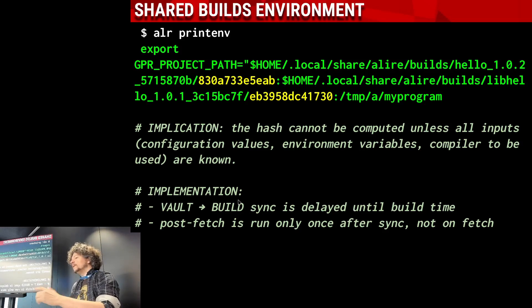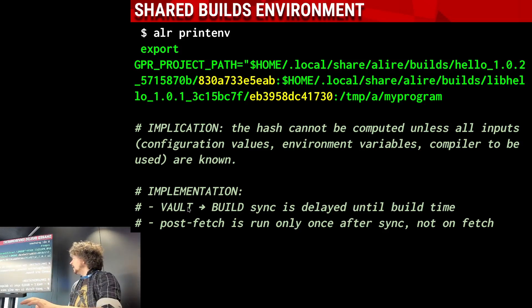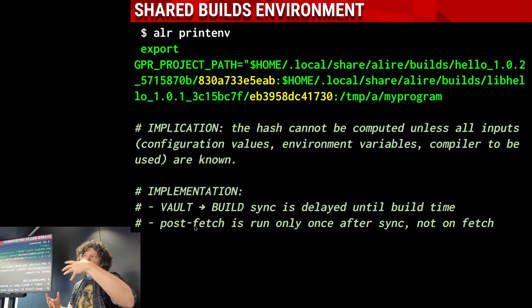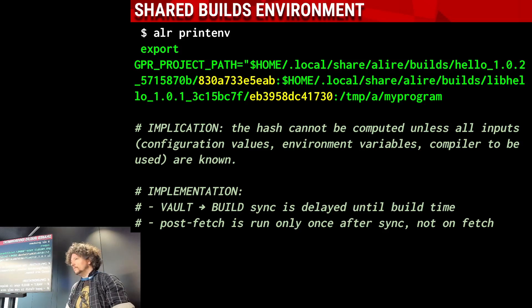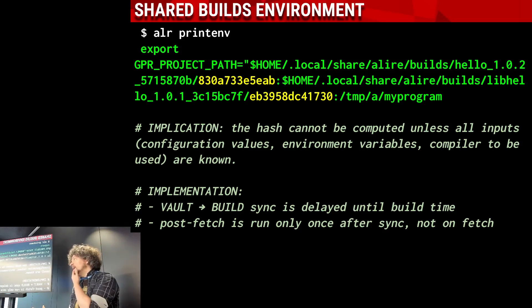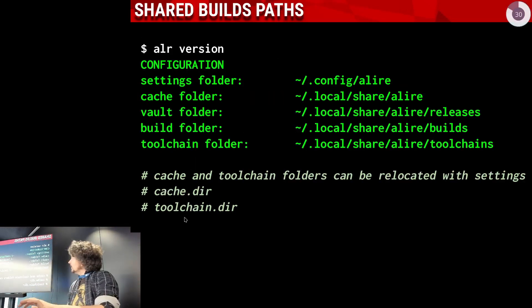This is reflected in the build environment: now it's not the release directory but the unique build identifier that is in the path. We cannot compute this value until everything is known, so we wait until the last possible moment — just before launching a potentially successful build — to generate these shared build locations. At that moment, if the build ID is still empty, it is synchronized from the pristine release sources and the post-fetch hook is run exactly once. You can check where things are using the 'alr version' command.